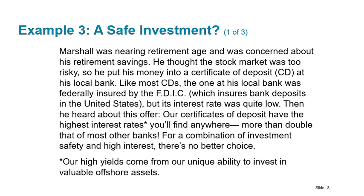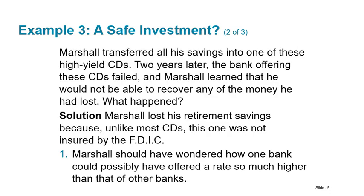Example three is our last example. Marshall was nearing retirement age and was concerned about his retirement savings. He thought the stock market was too risky, so he put his money into a certificate of deposit — a CD. Like most CDs, the one at his local bank was federally insured by the FDIC, but its interest rate was quite low. Then he heard this offer: 'Our certificates of deposit have the highest interest rate you'll find anywhere — more than double that of most other banks. For a combination of investment safety and high interest, there's no better choice.' He transferred all of his savings into one of those high-yield CDs.